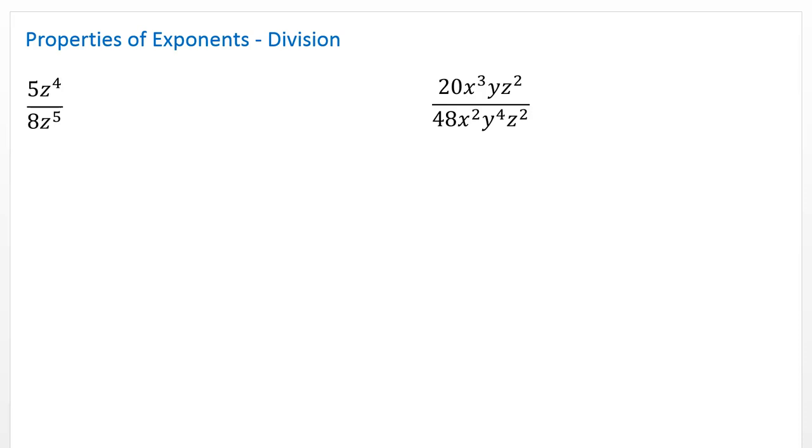Hey, so I've got a couple of problems here involving the quotient of monomials, and what a monomial is, is just a polynomial with one term, no addition, subtraction. Notice a monomial on the top and a monomial on the bottom, and what we're supposed to do is reduce these all the way down, so simplifying is usually the directions here.